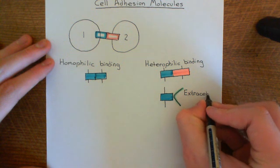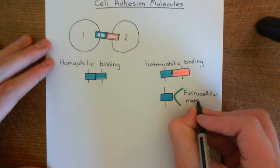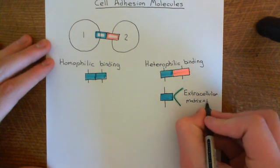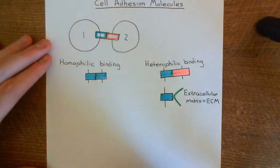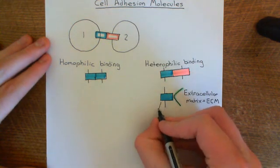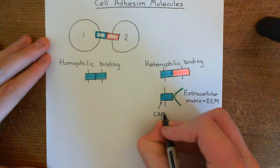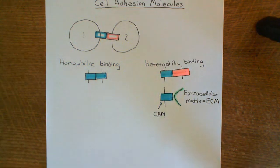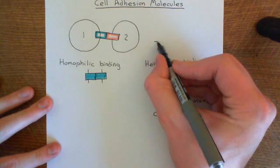This is some extracellular matrix protein. The extracellular matrix is often abbreviated to ECM — E for extra, C for cellular, and M for matrix. And cell adhesion molecules are usually abbreviated to CAM. Just to note the point of them being an integral membrane protein — we'll look at their structures in more detail when we look at the four different families.